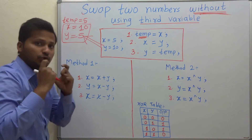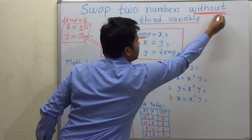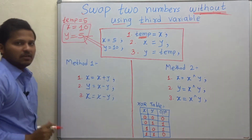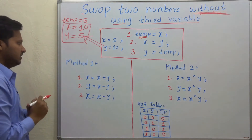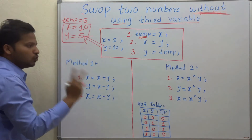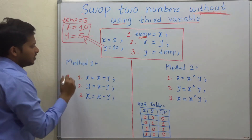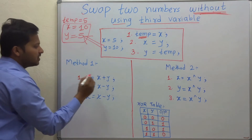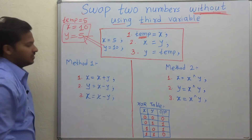Now we have to do it without using the third variable. There are two methods for doing this: the first method is by using addition and subtraction.